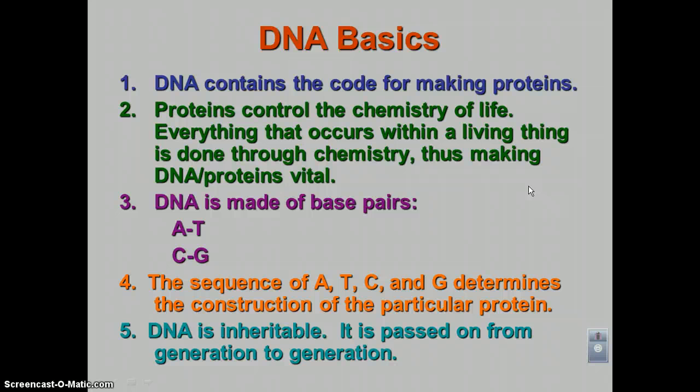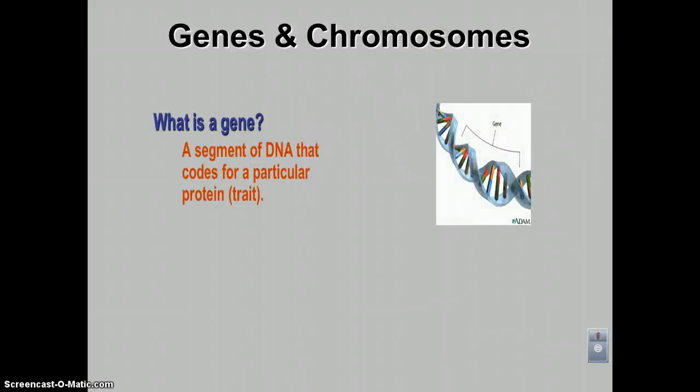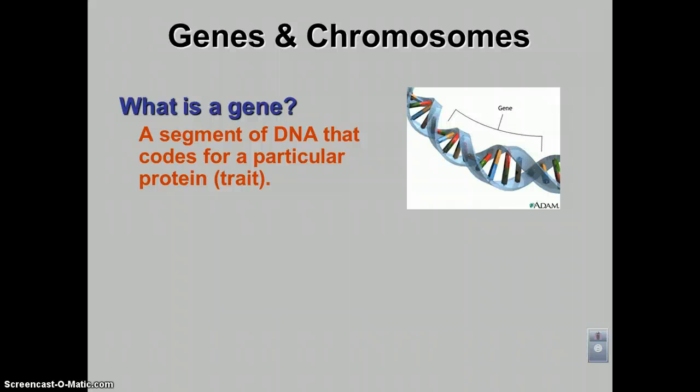DNA is inheritable — you get it passed on from generation to generation. So all the DNA that you have came from your parents. Now, genes and chromosomes: what is a gene? A gene is a segment of the DNA that codes for a particular protein.